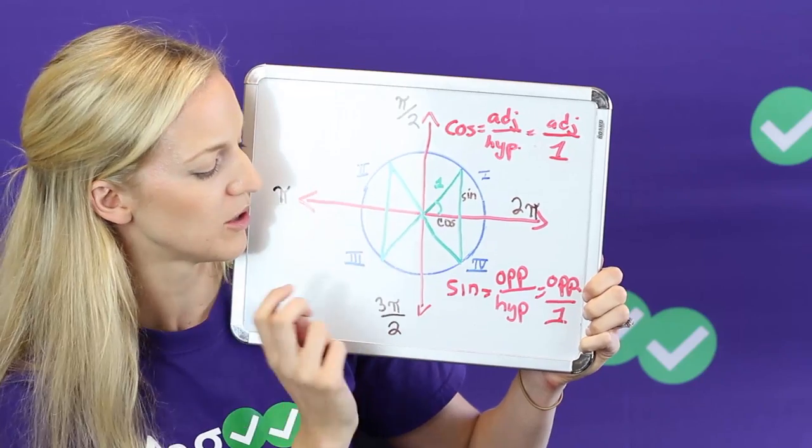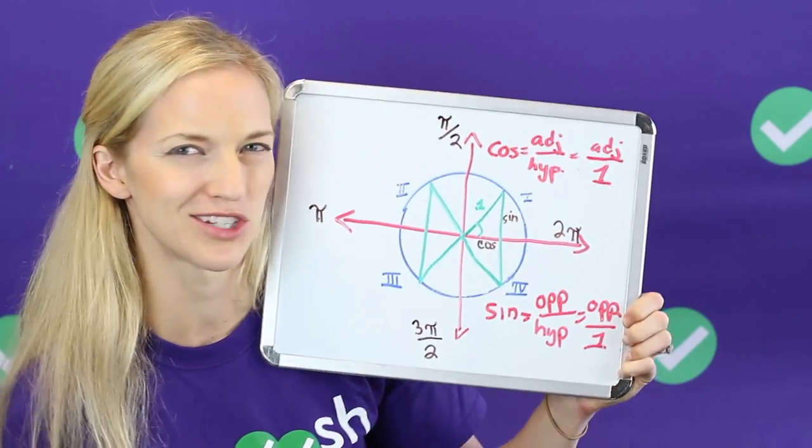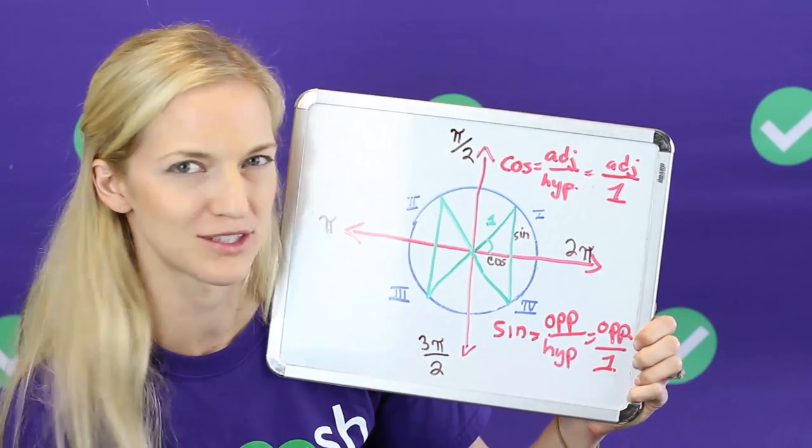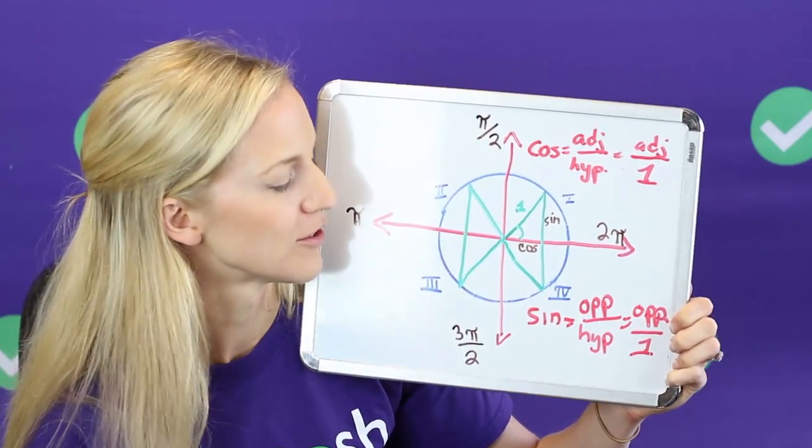This is quadrant one, this is quadrant two, quadrant three, and quadrant four. So the test usually doesn't refer to quadrants using those numbers but it's useful. It's useful to think about that in trig in general so you should know that.